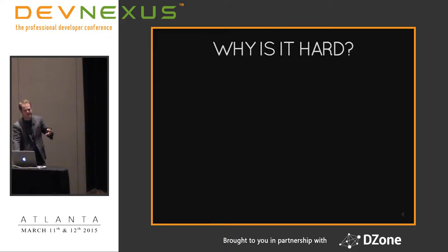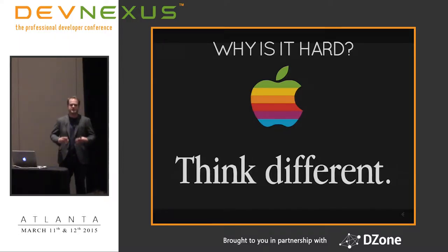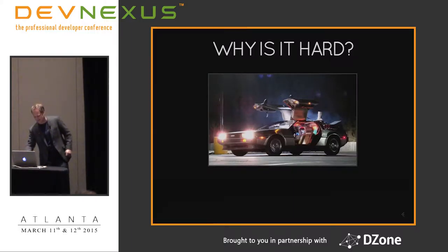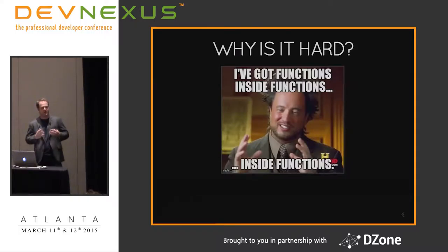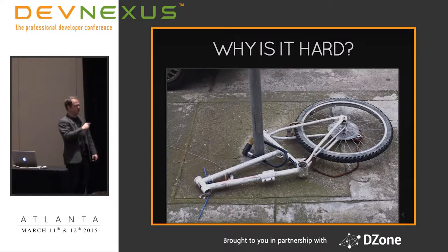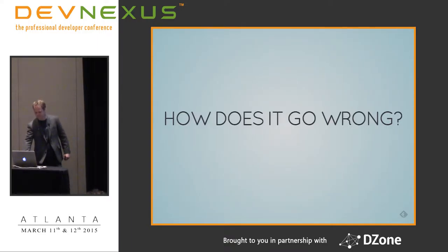Why is it hard to think about? You're transitioning from thinking sequentially to thinking about units of code that will run at some future time and impact the present. You have functions inside of functions, which makes it hard to reason about. And there's a chance that when your callback is ready to run, the view or fragment it needs is no longer there - that doesn't happen in a synchronous environment.